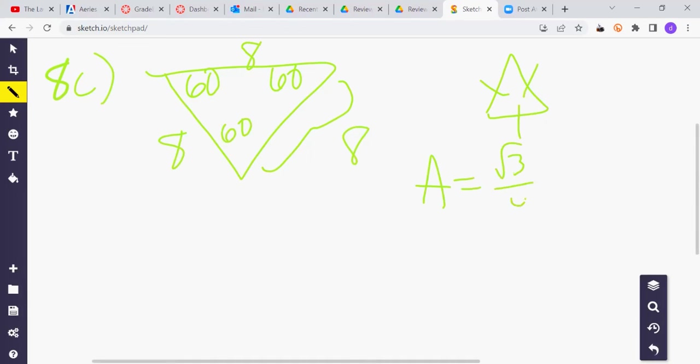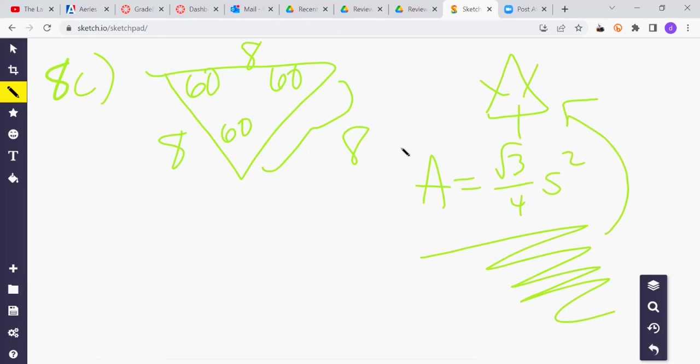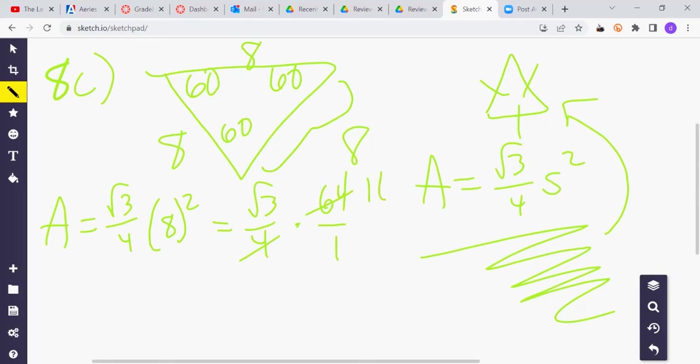And recall the special formula from a video not too long ago. This area formula only applies to the equilateral triangle, which is what we have. S is the side length. In this case, 8. So our area would be square root 3 over 4 times 8 squared. This is square root 3 over 4 times 64. Put a 1 underneath it. 4 goes into 64 16 times. Which is why the answer is this number right here.